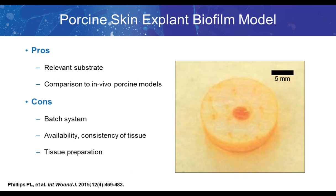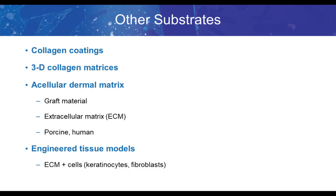Other substrates include collagen coatings available in kits for glass and other surfaces, 3D collagen matrices, acellular dermal matrix composed of extracellular matrix from porcine or human sources — though this material is fairly expensive and sometimes hard to get. There are also engineered tissue models which contain both extracellular matrix as well as cells such as keratinocytes and fibroblasts.